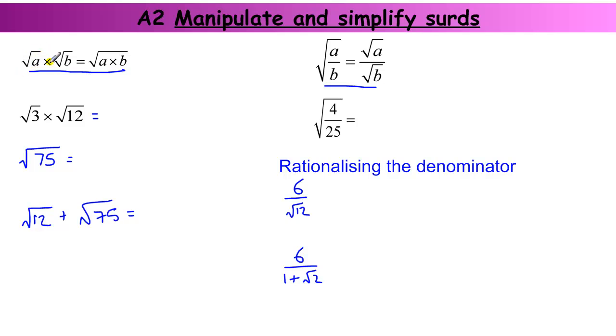Where if we have the square root of a number times the square root of another number, that is just equal to the square root of those two numbers multiplied by each other. That seems fairly obvious, but it's actually quite powerful.